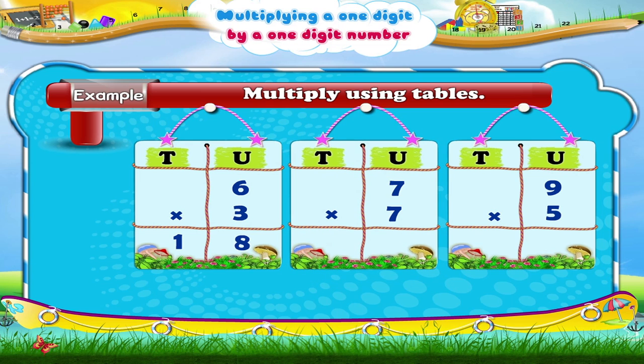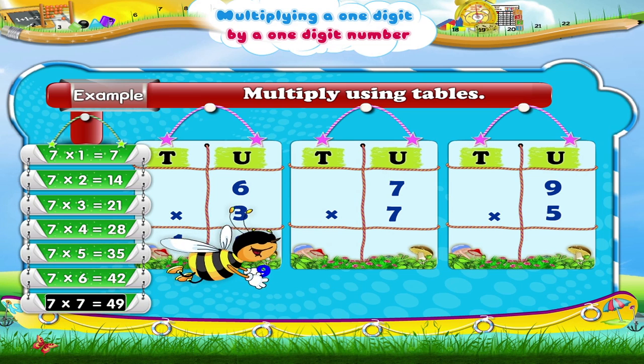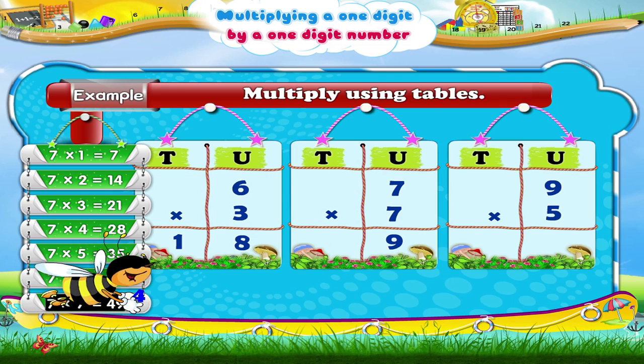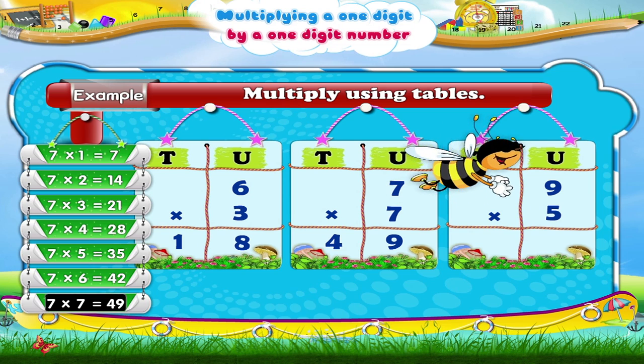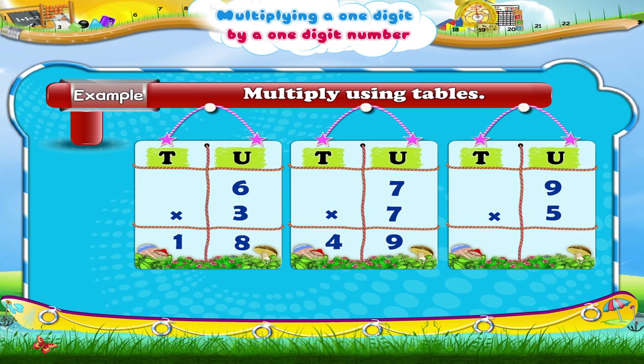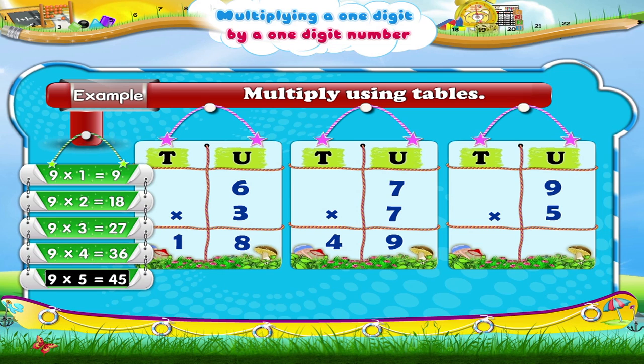In this example we say the seven times table till seven sevens. Seven sevens are forty-nine. The product is forty-nine. Here we say the nine times table till nine fives. Nine fives are forty-five. The product is forty-five.